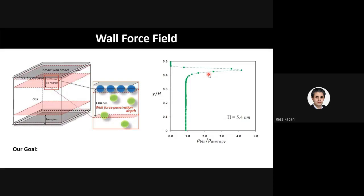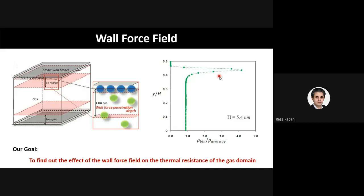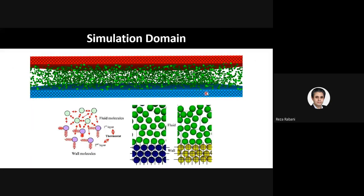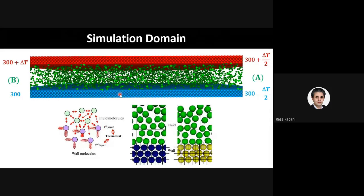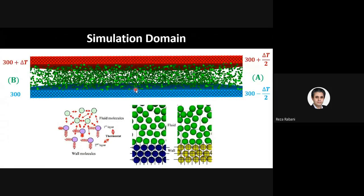The residence time of the gas atoms in that region increases. So our goal was to find how this phenomenon — increasing the density near the walls — affects the thermal resistance of the gas domain. We used such simulation and assigned higher temperature to the top wall and lower temperature to the bottom wall. The gas molecules are free to move and the wall atoms are connected with springs somehow — they vibrate, produce the temperature, the gas collides with them, and the heat is transferred between the two walls due to conduction.